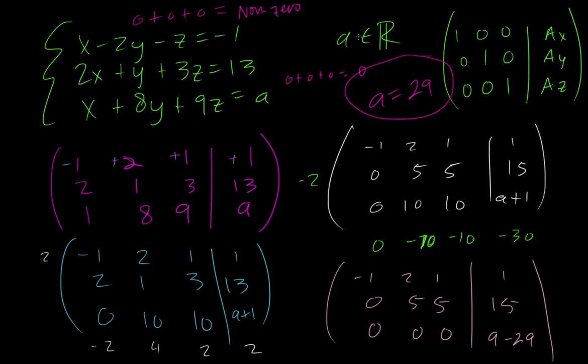So, the system will have no solutions unless A is equal to 29. Now, part B says, for what value of A does the system have no solutions? Oh, I guess I just answered that. So, A is not equal to 29 creates no solutions. A is equal to 29 creates infinite solutions.